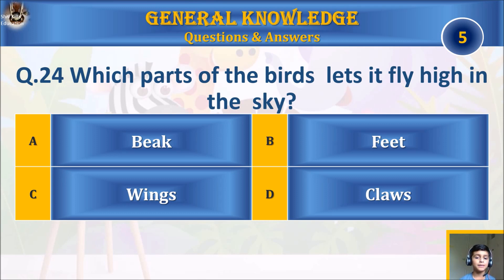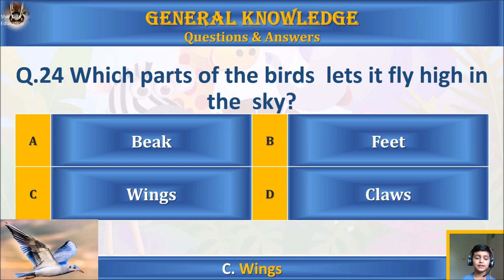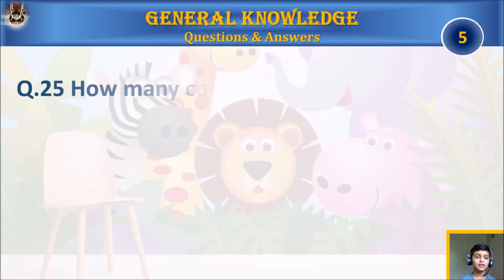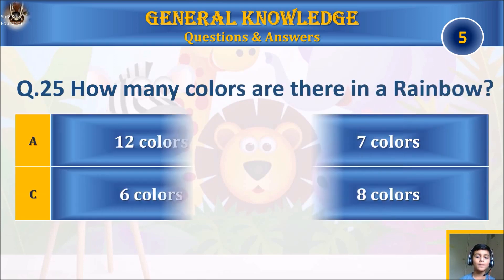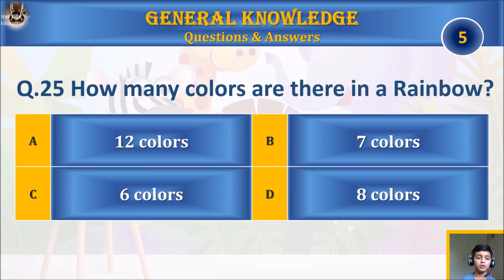Question twenty-four: which part of the bird lets it fly high in the sky? A) beak, B) feet, C) wings, or D) claws? Your time starts. The answer is C) wings.